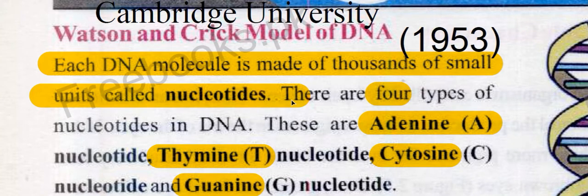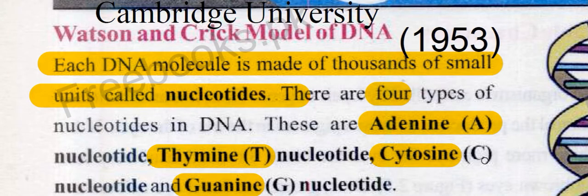How many types are there? There are four types of nucleotides in DNA. These are Adenine (A), Thymine (T), Cytosine (C), and Guanine (G). These four types of nucleotides are found in DNA molecules.